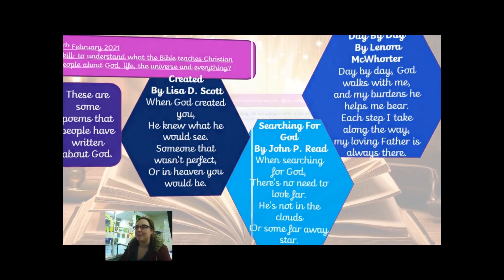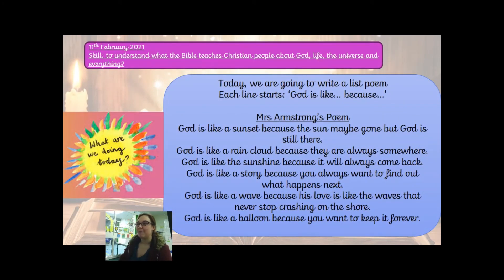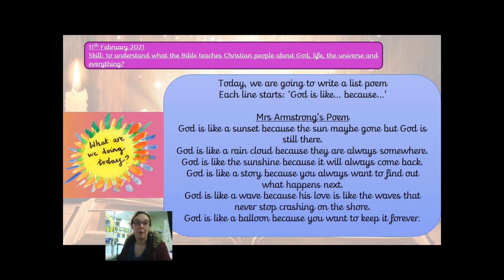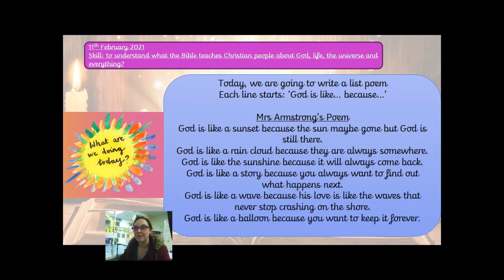So we're going to have a go today at writing a poem. It's going to be a list poem, which means the start of each sentence is like a list. I've done one to show you how to do it. Each line is going to start with 'God is like' and then you can choose one of your five pieces that you had, or think of something totally different, and then say why — 'because.' Here's my poem: God is like a sunset because the sun may be gone, but God is still there. God is like a rain cloud because they are always somewhere. God is like the sunshine because it will always come back. God is like a wave because his love is like the waves that never stop crashing on the shore. God is like a balloon because you want to keep it forever.